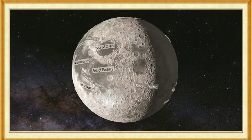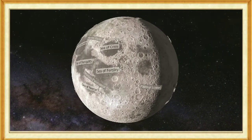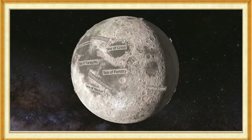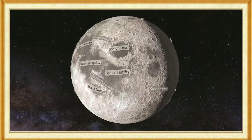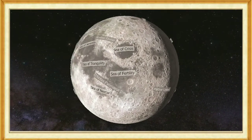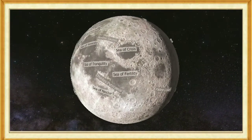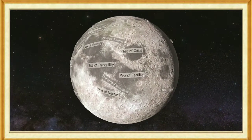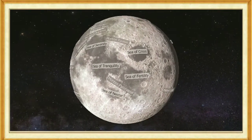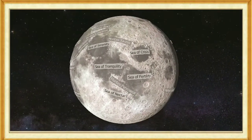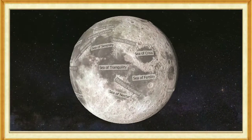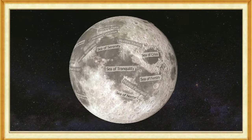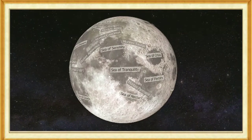Its diameter is a quarter of the Earth's, and its mass is only one eighty-first of that of the Earth. Therefore, its gravity is weaker. Its surface warms up to 130 degrees Celsius during the day, but due to strong heat radiation, it cools down to minus 160 degrees Celsius at night.